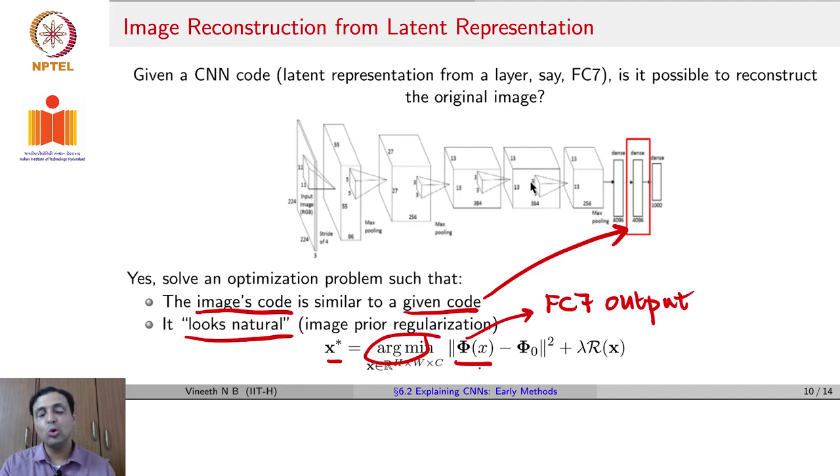We want the φ(x) that we optimize through this process to be close to the φ₀, which is given to us. Remember, we said there is a code given to us. We want to find an image whose code is close to the code that we have in our hand. So we are trying to do that using an optimization approach. Take an x, φ(x) - φ₀ must be minimized, the mean square error between them must be minimized. And you add a regularizer on top of x, similar to what we saw on the earlier slide. This is just an image regularization step.